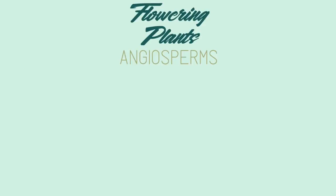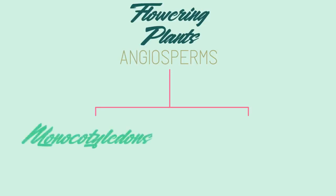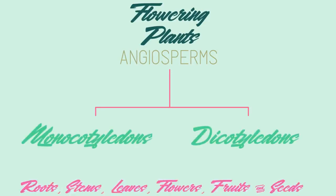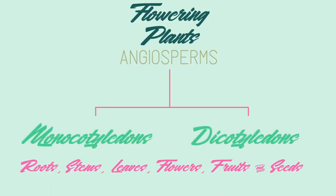Now for angiosperms — the largest and most diverse group in the plant kingdom. Angiosperms consist of two major groups: monocotyledons and dicotyledons. These groups differ with respect to their roots, stems, leaves, flowers, fruits, and seeds.